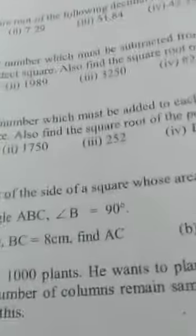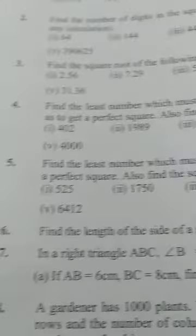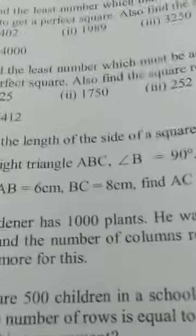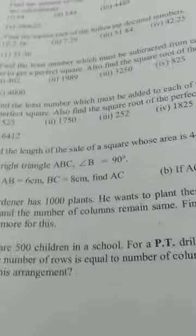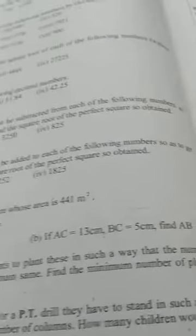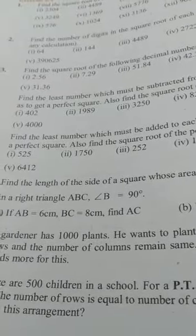Assalamu alaikum, 8th class students. We are doing square roots, exercise 6.4. We're on question number 4. Find the least number which must be subtracted from each of the following numbers so as to get a perfect square.